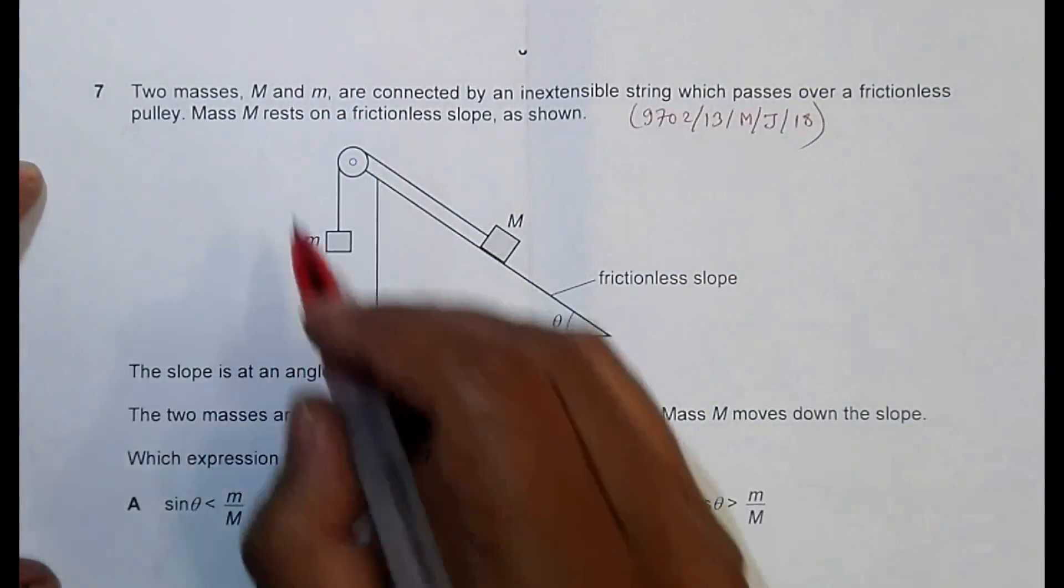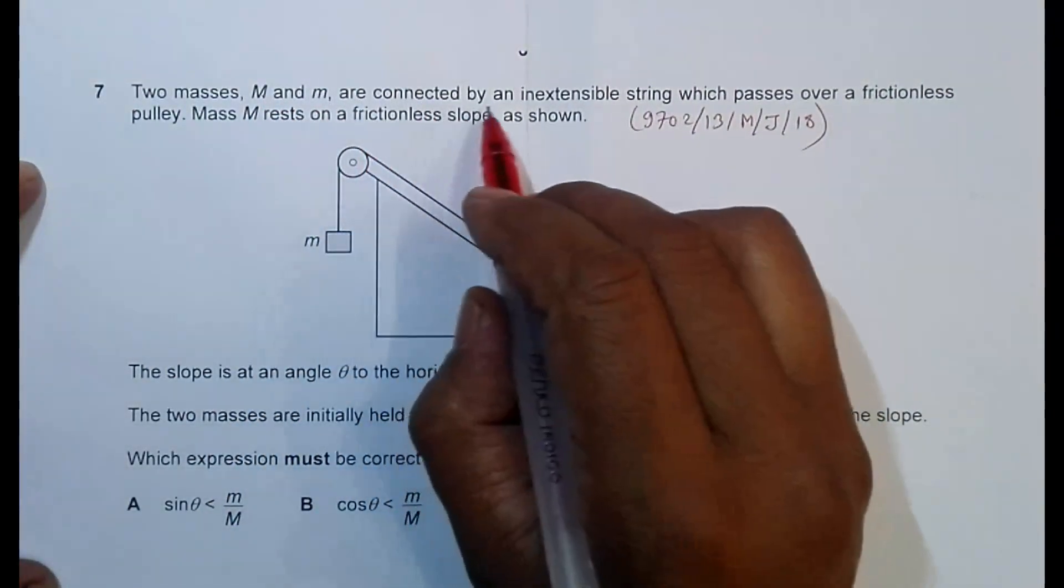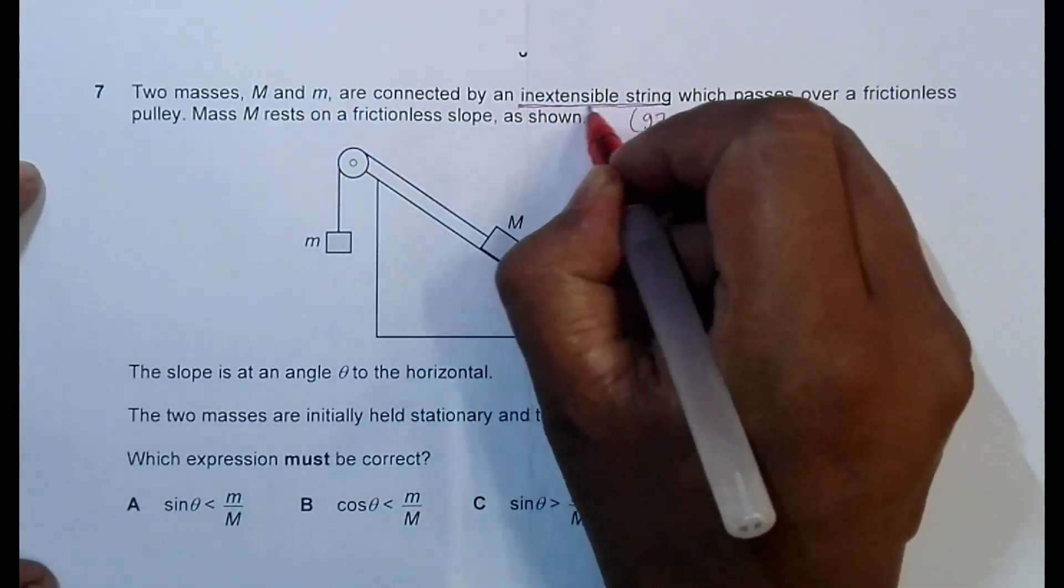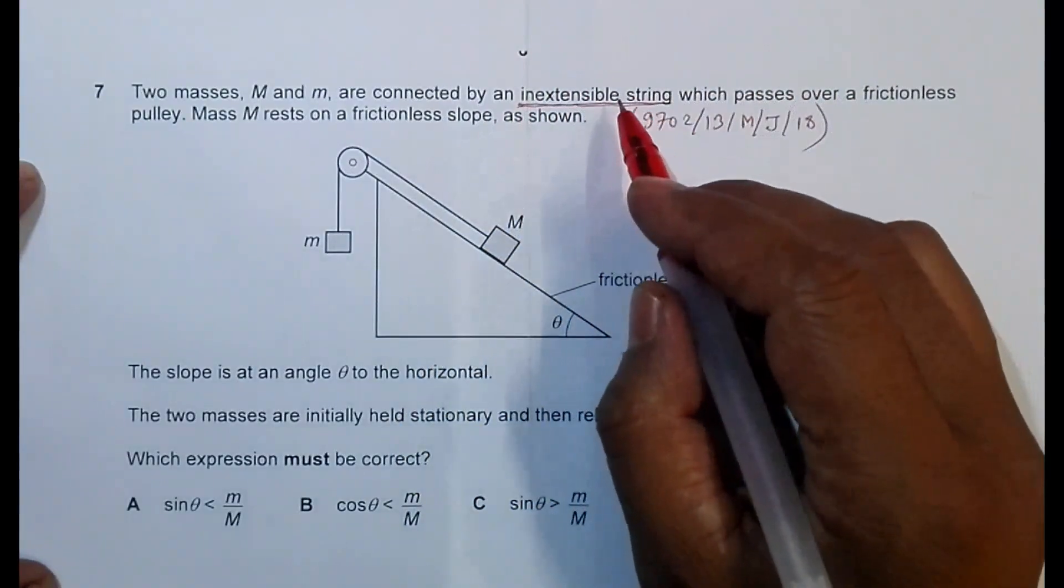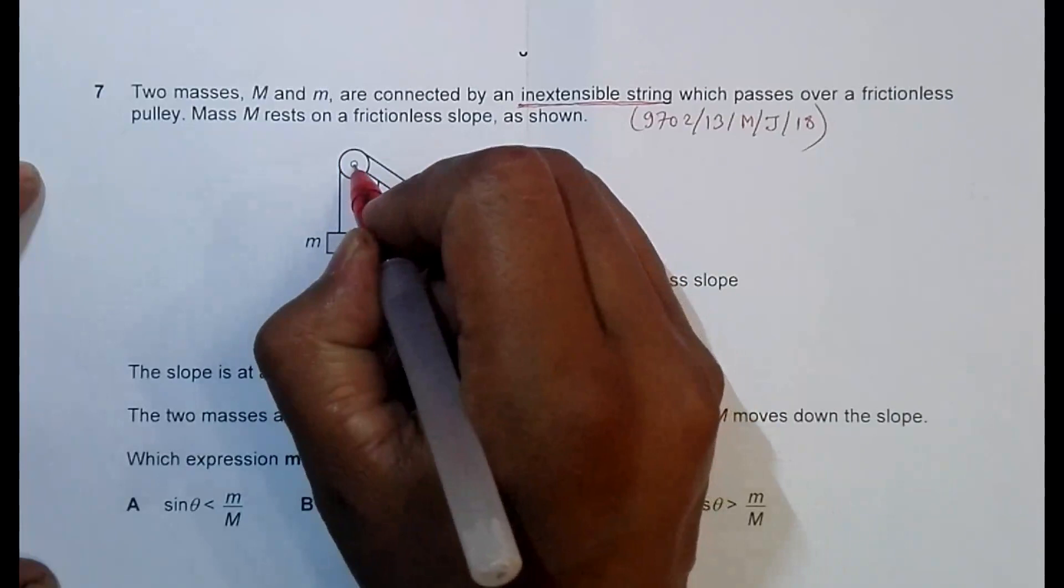It says that two masses large M and small m are connected by an inextensible string. So that means there is no extension, no force is wasted on extension, which passes over a frictionless pulley. So no friction over here.